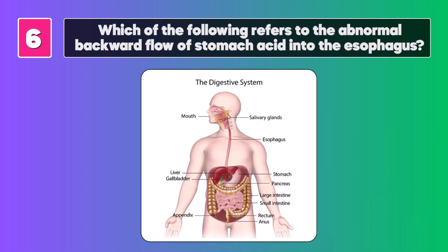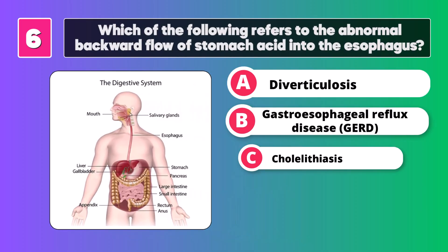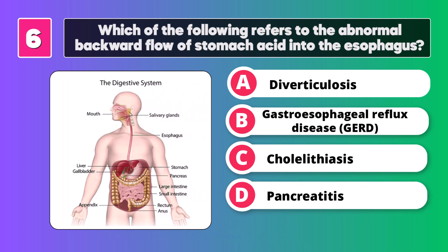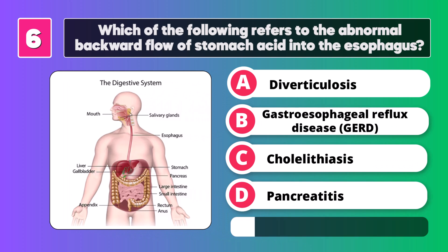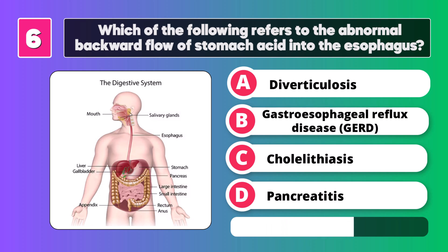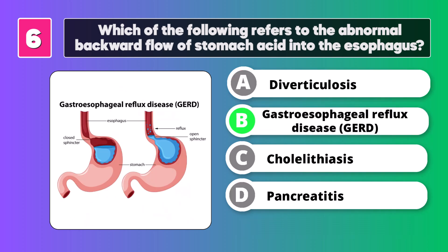Which of the following refers to the abnormal backward flow of stomach acid into the esophagus? Gastroesophageal reflux disease, GERD.